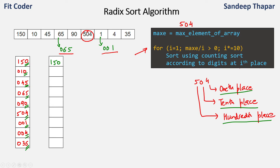Counting Sort is discussed in my previous videos — a link is in the description and top right corner — because Radix Sort uses Counting Sort as a subroutine. Sorting by the 1s place, we get: 150, 090, 001, 504, 004, 045, 065, 035. First we have all the zeros, then one, then four, then five at the ones place. Because Counting Sort is a stable sort, digits that are the same maintain their relative order.